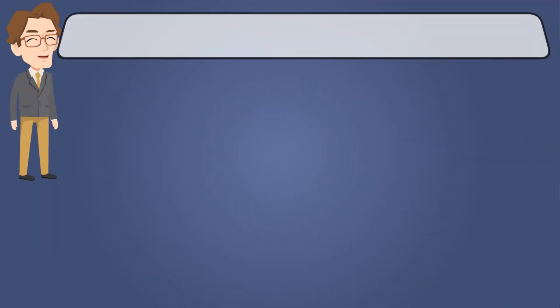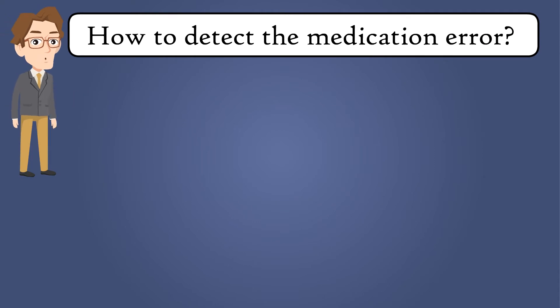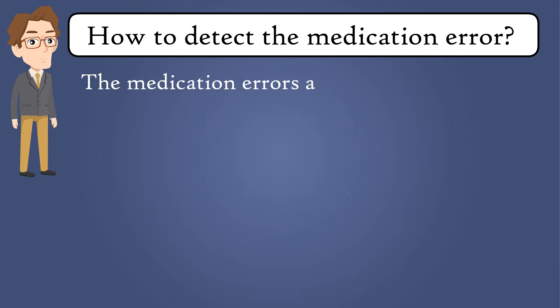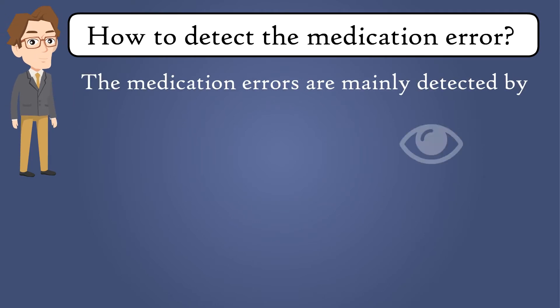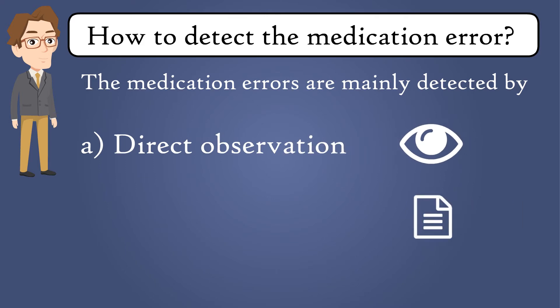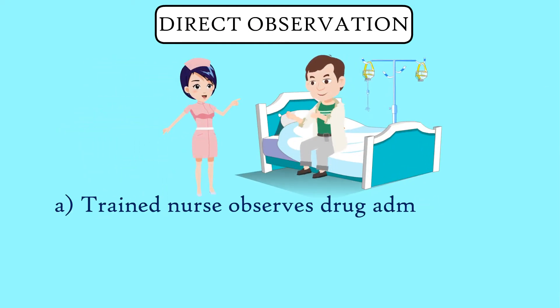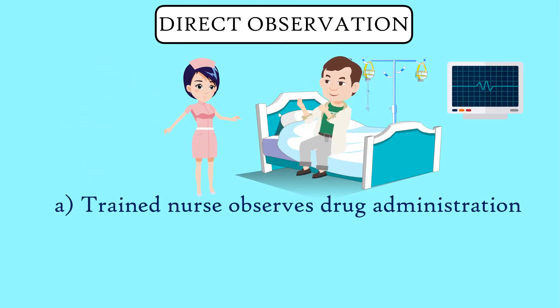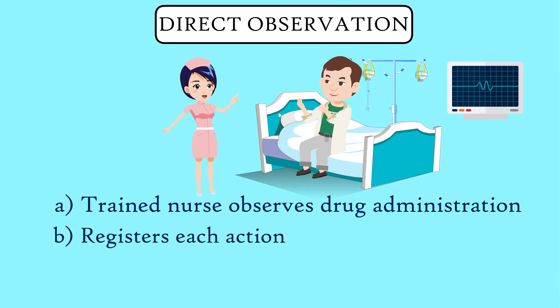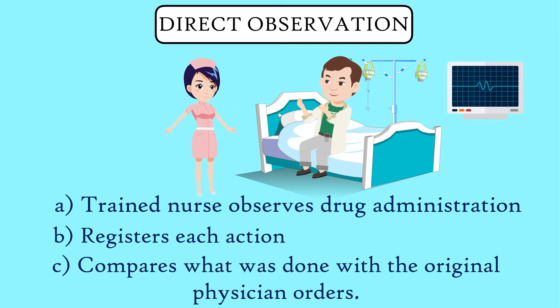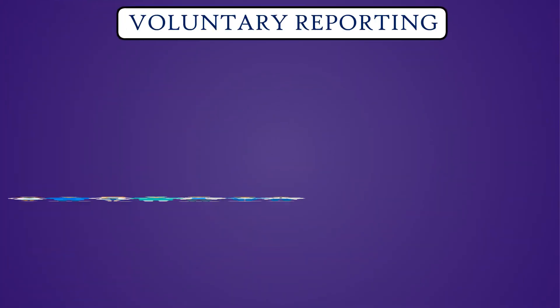Now let's look at how to detect medication errors. Medication errors are mainly detected by direct observation and voluntary reporting. In direct observation, a trained nurse observes drug administration, registers each action, and compares what was done with the original physician orders.